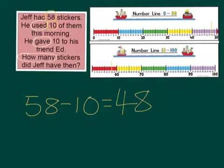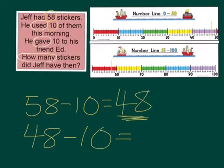Now, after he used those 10, he had 48 left. Then he gave 10 to his friend Ed. So what do you think our next number sentence would be? That's right, then we start with 48. And then we take away another 10 because that's how many he gave to his friend.